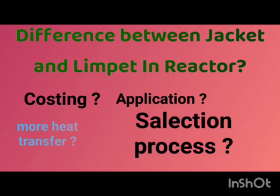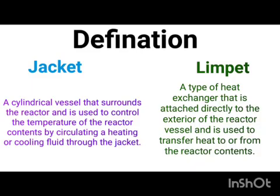We also discuss the selection process of jacket and limpet. Before starting the video, if you are new please subscribe to the channel. A jacket is nothing but a cylindrical vessel that surrounds the reactor and is used to control the temperature of the reactor contents by circulating heating or cooling fluid through the jacket.